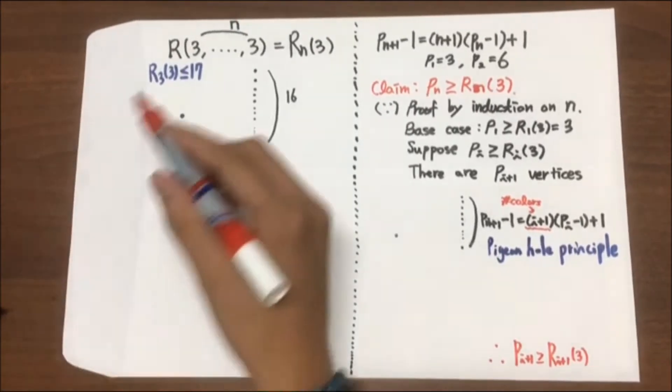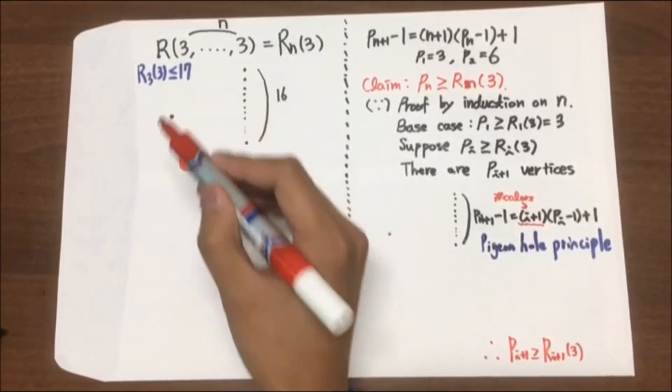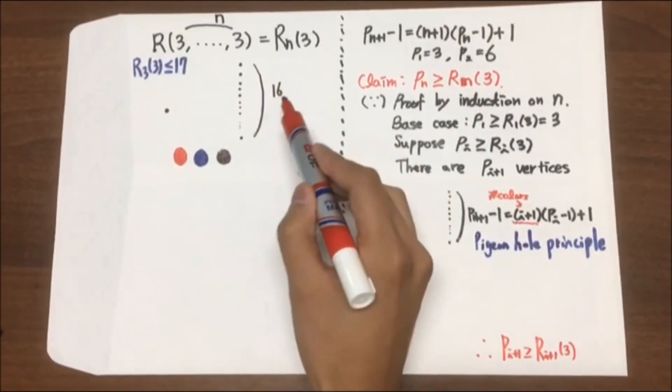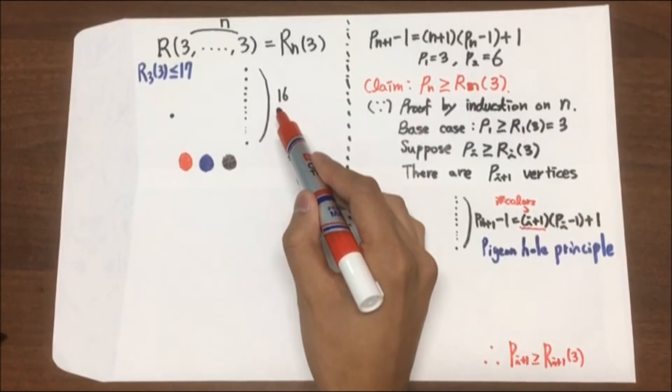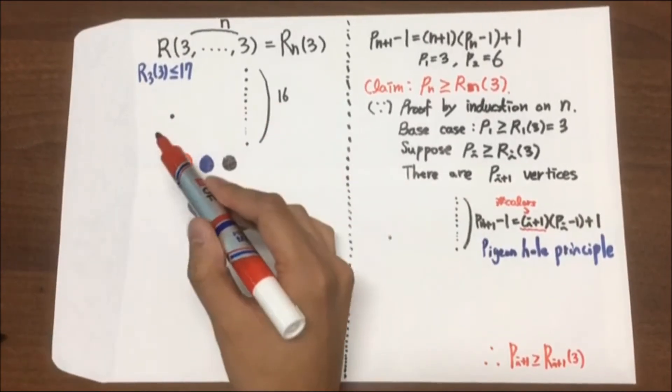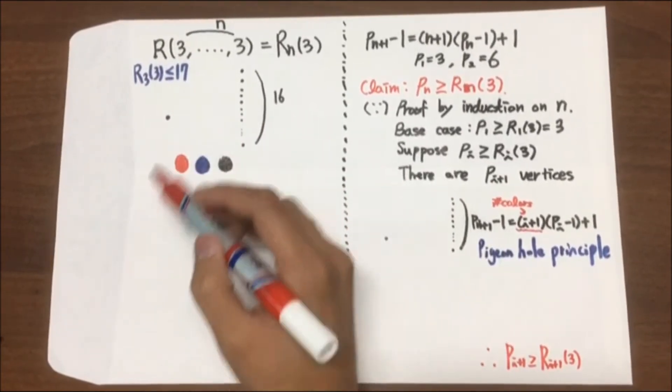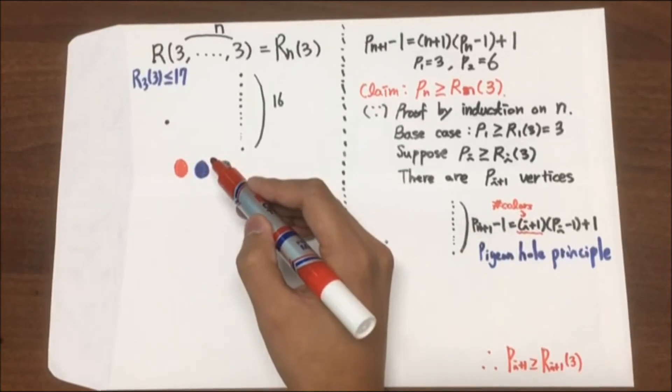So, suppose we choose one vertex out of 17. There are 16 edges which should be colored with 3 colors. Therefore, by the pigeonhole principle, 6 edges should be colored with the same color, say red.